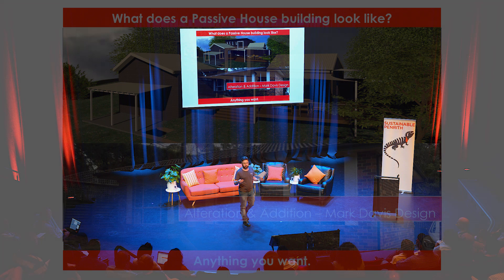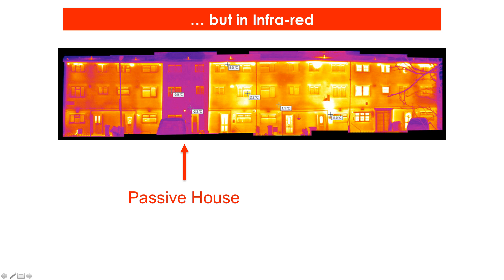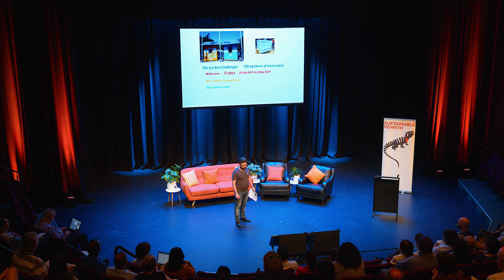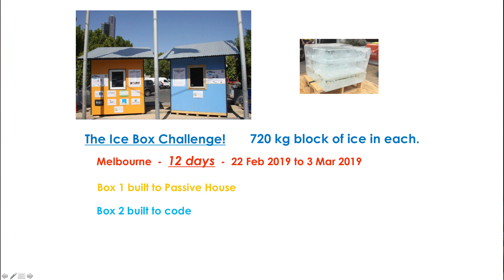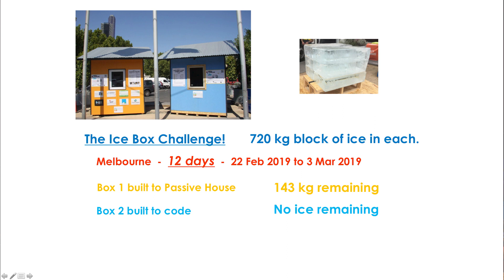If we look at a Passive House in infrared we see a massive difference. This is a wintertime shot of a row of terraces and you can see the Passive House that's been upgraded is leaking far less heat than the rest. Just to show how well Passive House is suited to the Australian climate — at the beginning of last year in Melbourne we held what's called an icebox challenge. We built two little boxes, one to Passive House and one to the National Construction Code six star. We put a 720 kilogram block of ice in each with sensors inside and outside. At the end of 12 days of a Melbourne summer the Passive House had 143 kilograms of ice remaining; the six star house had none.